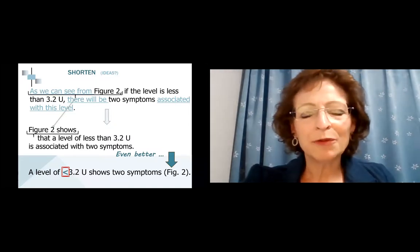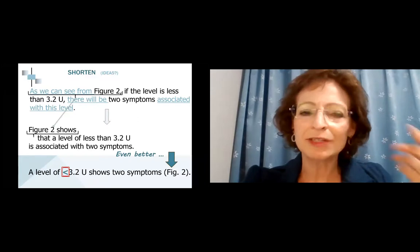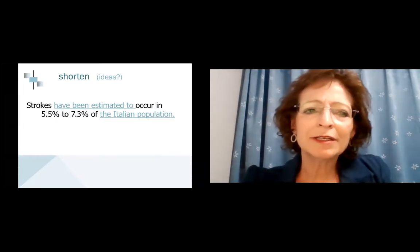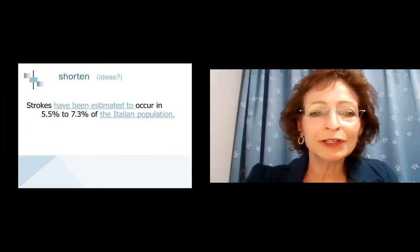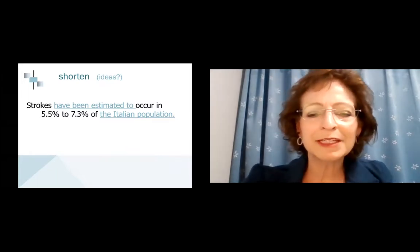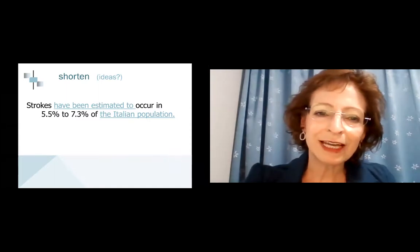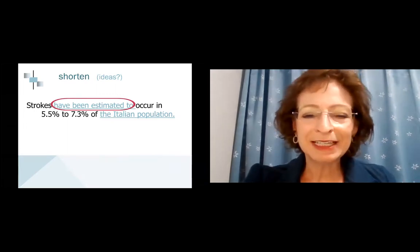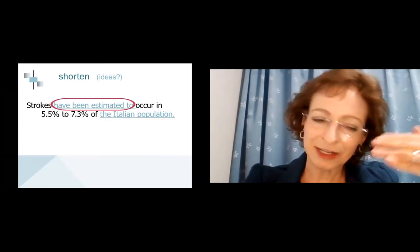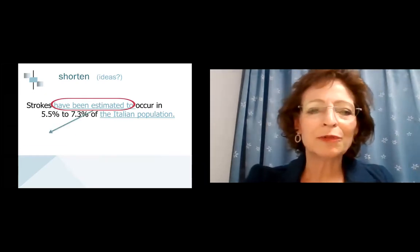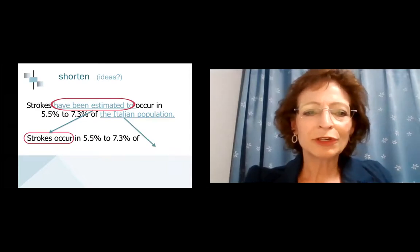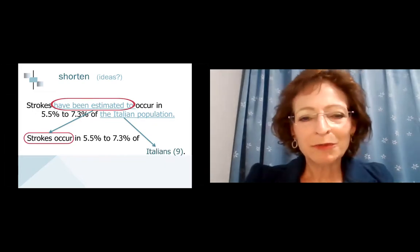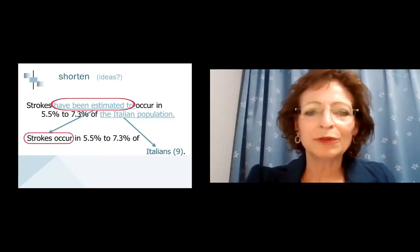There are other ways to shorten. For example, 'Strokes have been estimated to occur in 5.5 to 7.3 percent of the Italian population.' There isn't any reference, and we probably should have a reference if it's been estimated. Also there isn't any distinct Italian population—we don't know if this is Italian adults, Italian males. We need to check the reference, but how about simply: 'Strokes occur in 5.5 to 7.3 percent of Italians,' and then include the reference citation. Present tense 'occur' because it's published.